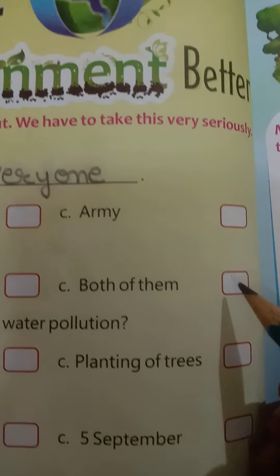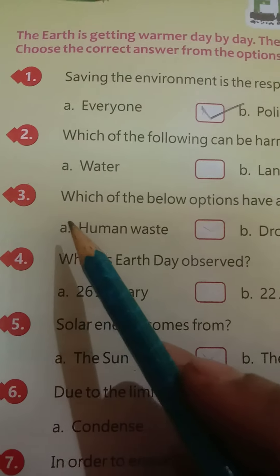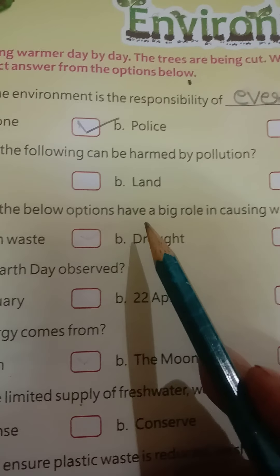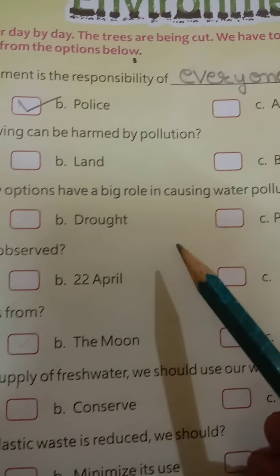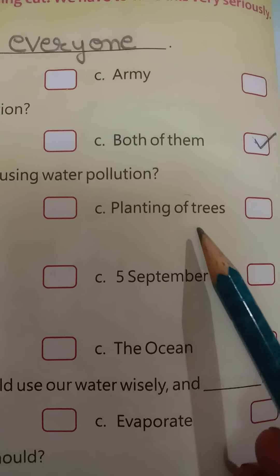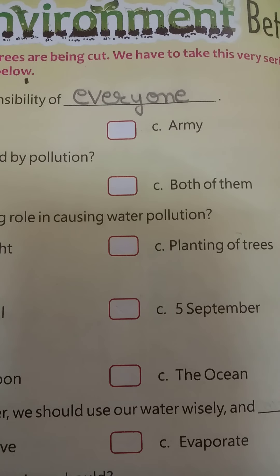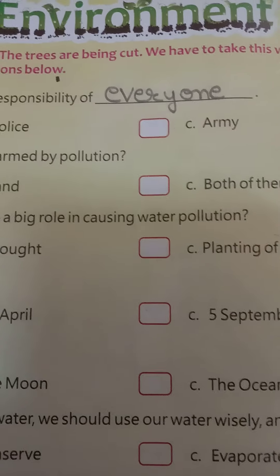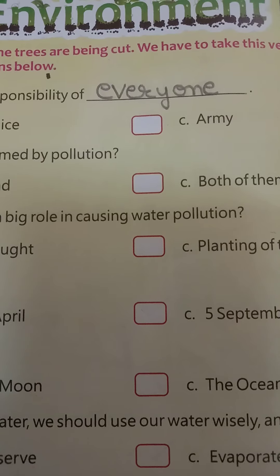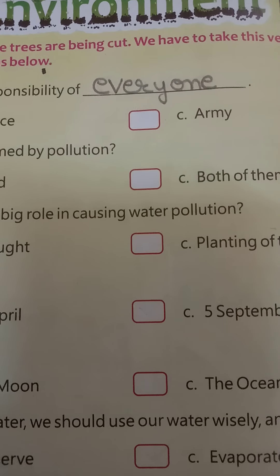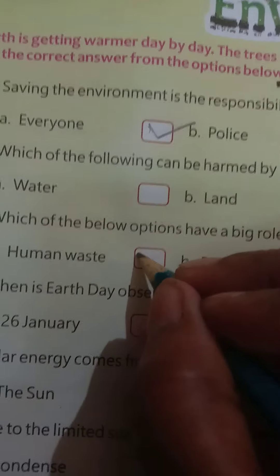The correct option is C: both of them. Third question: which of the options has a big role in causing water pollution? Options include human waste, drought, and planting of trees. Human waste — such as disposal of untreated waste, dead bodies, industrial waste, polythene, and soapy water — causes water pollution. The correct answer is human waste.